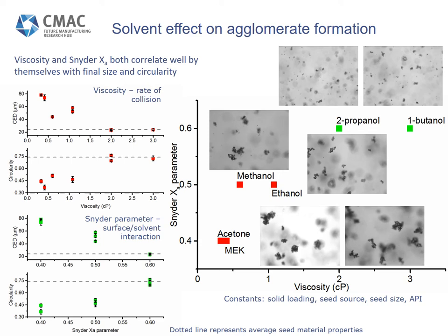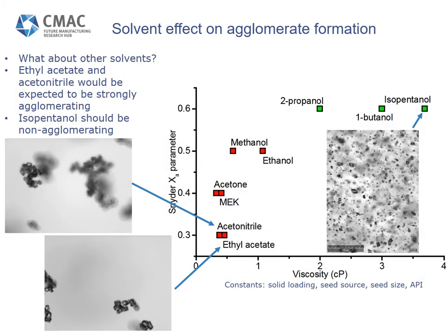Qualitatively this matches what is seen in the PVM images, with acetone and MEK showing a larger degree of agglomeration compared to 2-propanol and 1-butanol. Although this works for the solvents already investigated, can we use this to predict how other solvents will behave? Ethyl acetate and acetonitrile, with their low viscosity and low Snyder parameters, would be expected to be strongly agglomerating, while isopentanol would be expected to be non-agglomerating. In testing this hypothesis, we do indeed see large agglomerated particles in acetonitrile and ethyl acetate, but no agglomeration in isopentanol. You'll also notice that the image for isopentanol is taken from an in-situ camera on a high-throughput screening device, which is an aspect I'll touch upon later.